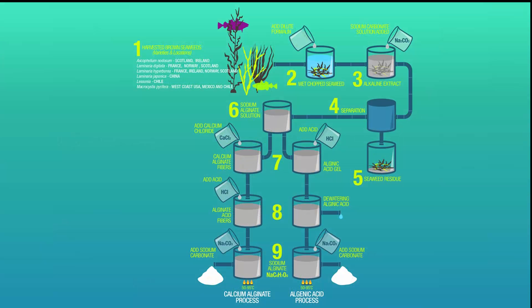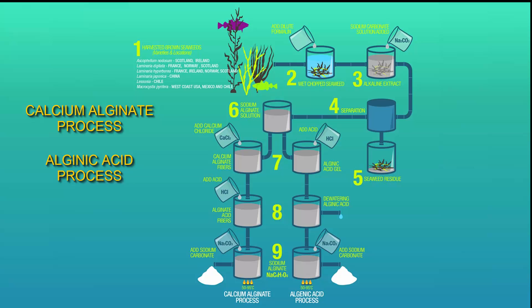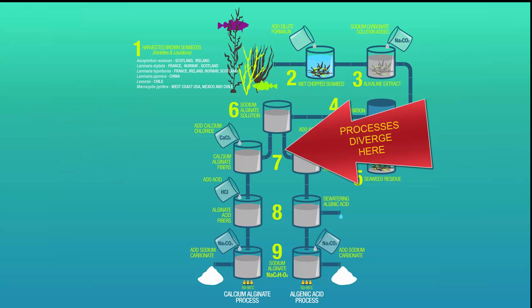Alginate is refined using two methods, the calcium alginate process and the alginic acid process. The processes are identical through the first six steps but then diverge in the last three of the refining steps.